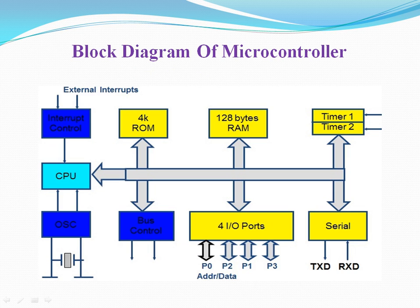This is the basic block diagram of a microcontroller. As you can see, it has various interfacing with it, like EEPROM — that is 4KB of ROM. It also has 128 bytes of RAM, 2 timers, 1 serial interface, 4 ports, a control circuitry for crystal oscillator, and interrupts.